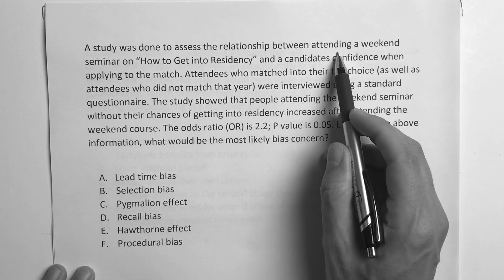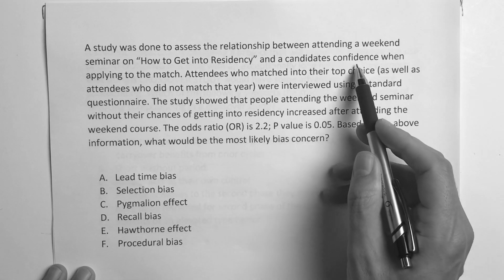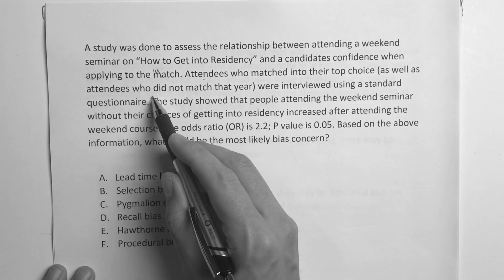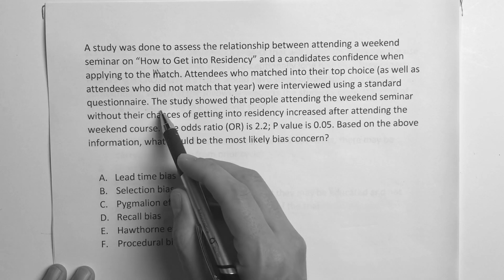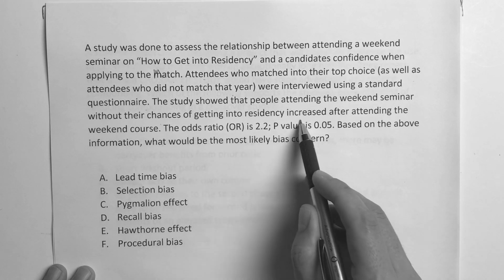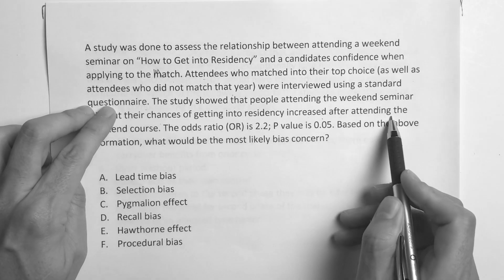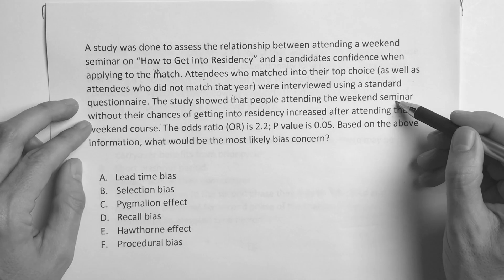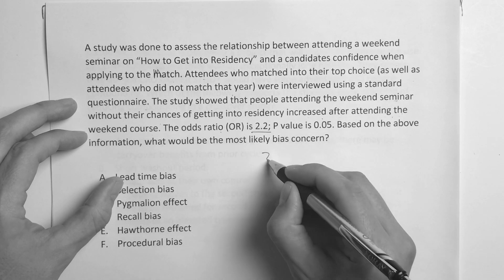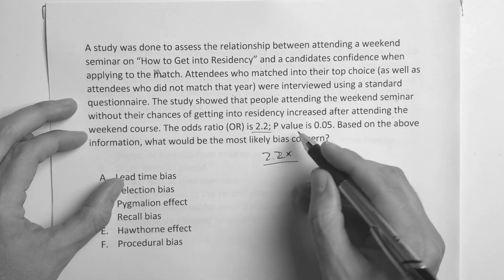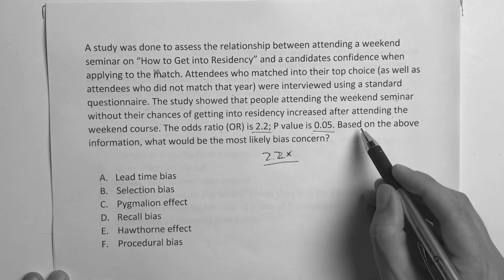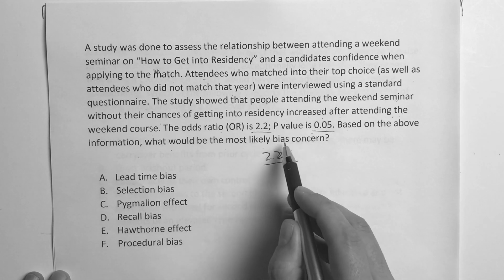A study was done to assess the relationship between attending a weekend seminar on how to get into residency and candidates' confidence when applying to match. Attendees who matched into their top choice as well as attendees who did not match that year were interviewed using a standard questionnaire. The study showed that people attending the weekend seminar felt their chances of getting into residency increased after attending the weekend course. The odds ratio is 2.2, p-value is 0.05. Based on the above information, what would be the most likely bias concern?